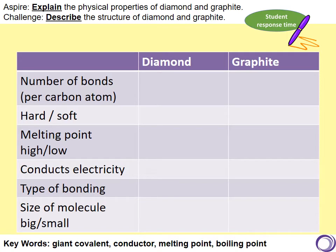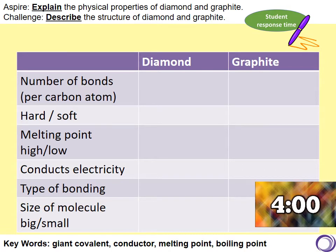Right, time for you to summarise what I've just said. For diamond and graphite, can you say how many bonds each carbon atom forms? Is it hard or soft? Does it have a high or low melting point? Does it conduct electricity? What type of bonding does it have, and is it a large or a small molecule? Four minutes — off you go.